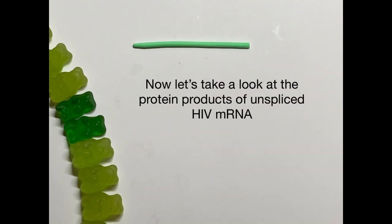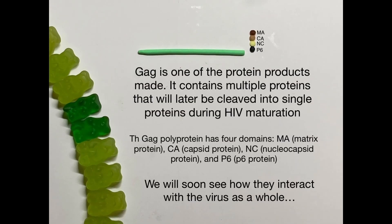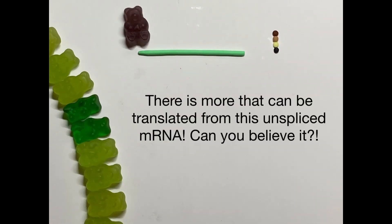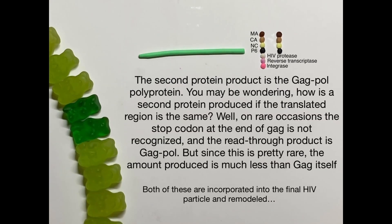The unspliced mRNA produces GAG, a multi-protein product that is later cleaved by HIV protease during virus maturation. GAG has four domains: matrix protein, capsid protein, nucleocapsid protein, and P6 protein. A second protein product, the GAG-POL polyprotein, can also be made from the same unspliced mRNA — on rare occasions the stop codon at the end of GAG is not recognized and the read-through product is GAG-POL. Because this is rare, the amount of GAG-POL is much less than GAG itself, but both are incorporated into the final HIV particle.